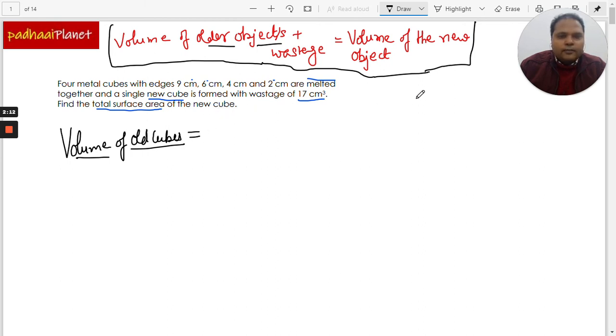We already know that the volume of the cube, volume of any cube, is the cube of its edge. So since the edges of these four cubes are already given, it's very easy to find out the volume.